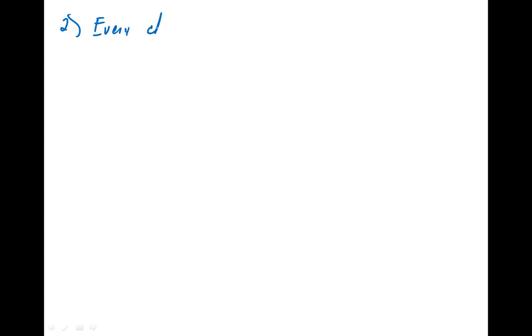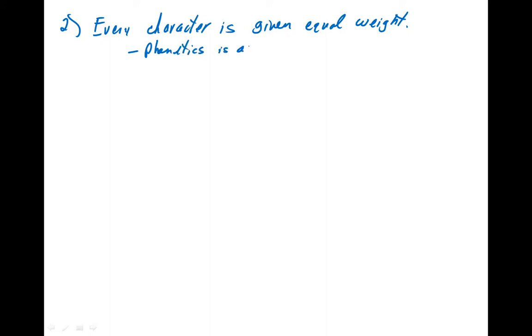The second fundamental principle: every character is given equal weight. In other words, phonetics is an Adansonian system — it follows the principles of Michael Adanson.